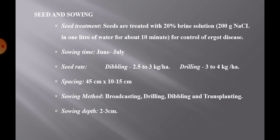Spacing is 45 cm between rows and 10 to 15 cm between plants. Sowing methods include broadcasting, drilling, dibbling and transplanting. Among these four methods, transplanting gives better results. Sowing depth is 2 to 3 centimeters.